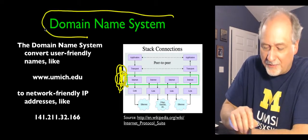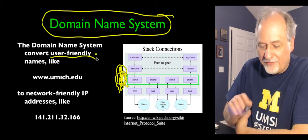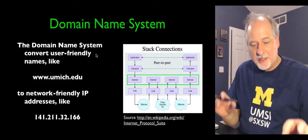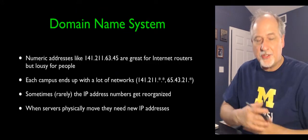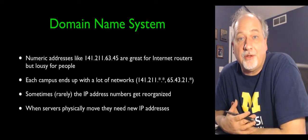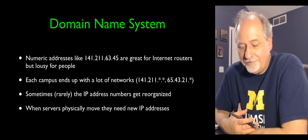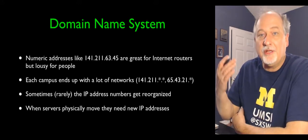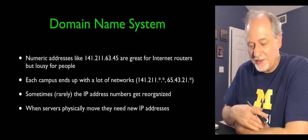The domain name system is for user-friendly names. Domain names are what we use all the time, and IP addresses are what computers and routers use. Routers have no knowledge of domain names. They simply move data based on IP addresses.